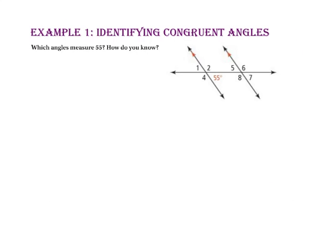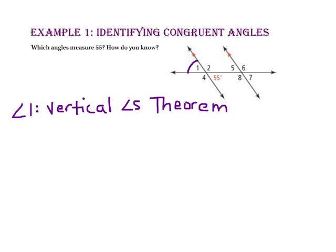In Example 1, we will be identifying congruent angles. Which angles measure 55 degrees? How do you know? Let's start by looking for vertical angles. We know that angle 1 is vertical to this 55-degree angle, so it will also be 55 degrees.